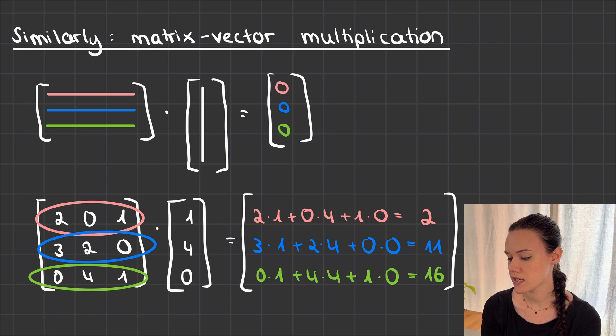So for the first entry in pink, you take the first row of the matrix and then you multiply 2 by 1 plus the second entries are 0 and then 4 in the vector plus 1 times 0 again from the vector is in total 2. And then for the second entry in blue, you do the same with the second row from the matrix, and again multiply each entry with the respective entry from the vector.